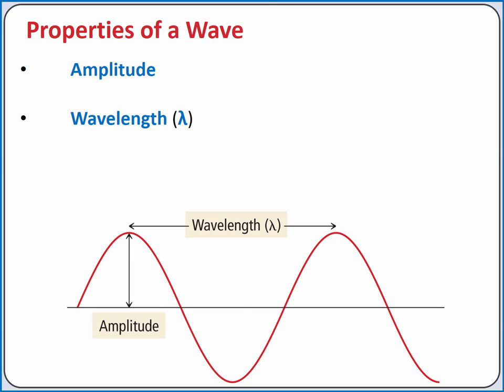Waves have particular properties. For example, the amplitude of a wave is the distance between the midpoint and the crest, which is the highest point on the wave. The wavelength is the distance between two consecutive points on the wave, for example between two consecutive crests.